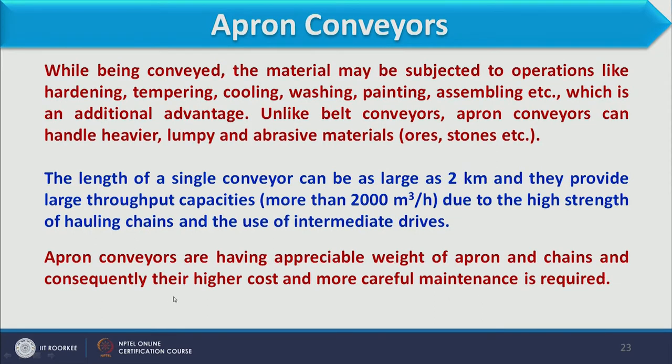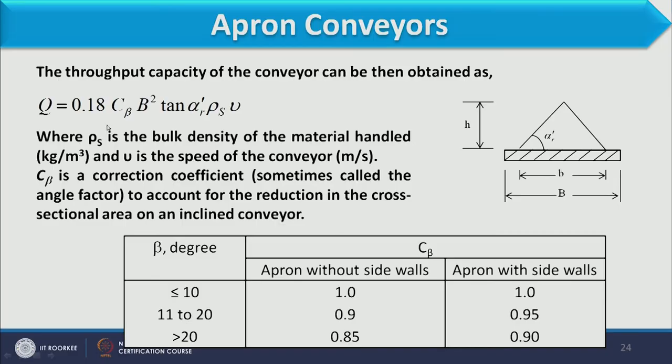A disadvantage of apron conveyors is the appreciable weight of the apron and chain, resulting in higher cost and the need for more careful maintenance. This is the main drawback compared to belt conveyors.